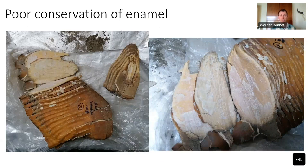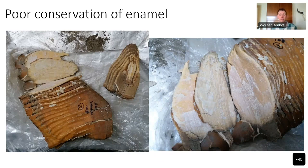One reason you might want to consider using dentine rather than enamel is very poor conservation. This is a mammoth molar as I encountered it on a sampling trip in St. Petersburg just before the COVID pandemic. The enamel — the white material — is completely deteriorated, cracked, and has become dust after only 10 to 15 years in storage in St. Petersburg, where very cold winds and very warm summers cause temperature fluctuations detrimental to enamel. Dentine, because of its higher collagen content, is much more flexible and malleable, and it moves with these temperature ranges. As you can see, the inside of these loaves — as they're called in mammoth molars — the dentine is still excellently preserved, whereas the enamel is completely gone.